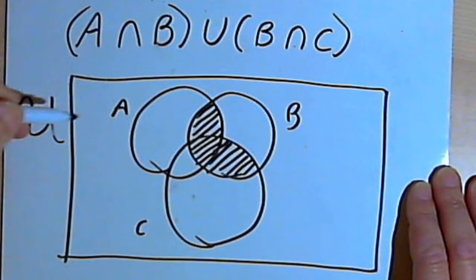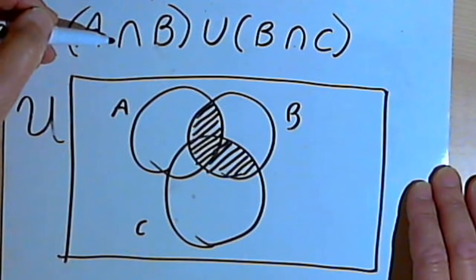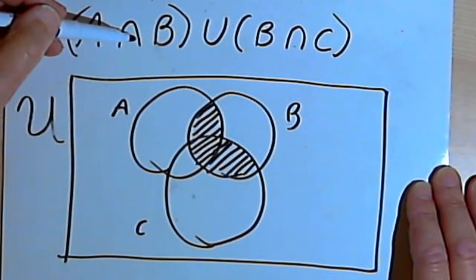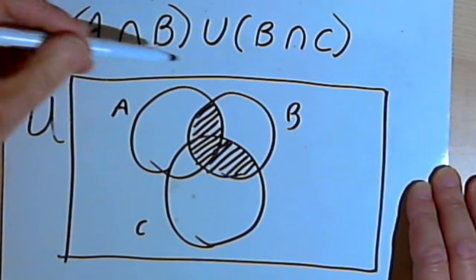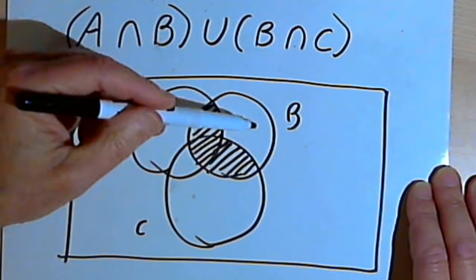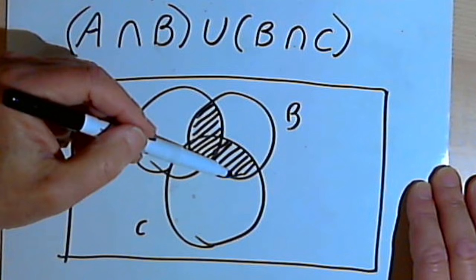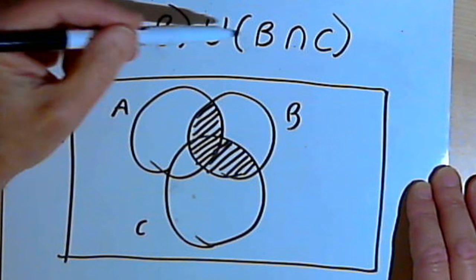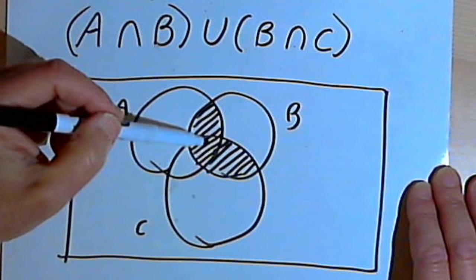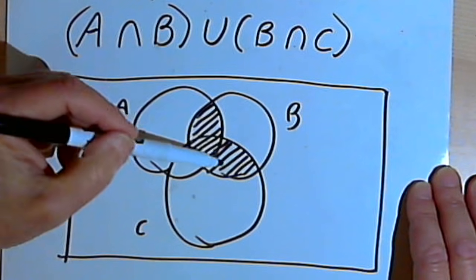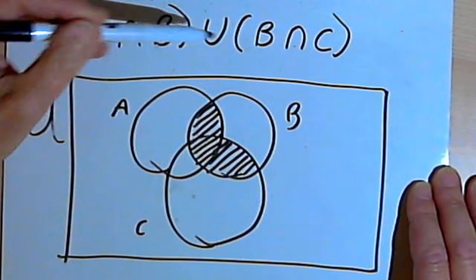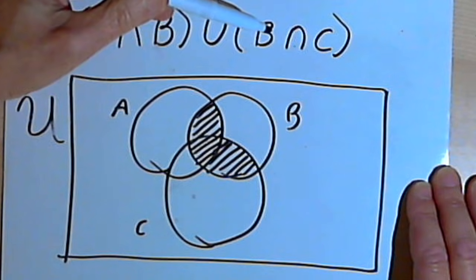So what I've got is everywhere A and B overlap — that was the intersection of A and B — as well as every place where B and C overlap — the intersection of B and C. And since it's the union of those two overlapping areas, I'm going to include anything shaded from the first intersection as well as the second intersection.